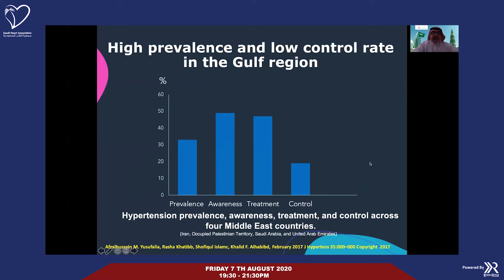Despite how common the disease is, almost half don't know they have hypertension. And when we go to those who do have hypertension, only half are on treatment. The control rate is about 20%. So we are underdiagnosing the disease, under-treating, and under-controlling it. We have to do something — we cannot continue like this. We need more diagnosis, more treatment, and more control.